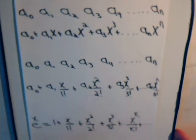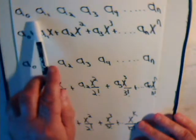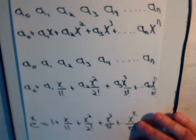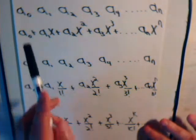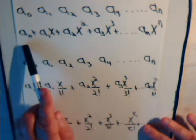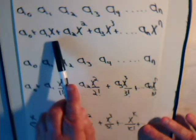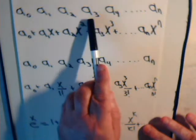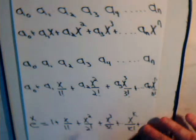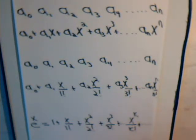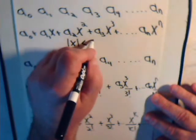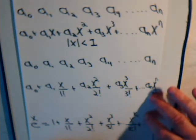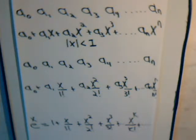Remember from our past videos dealing with ordinary generating functions — if we had a sequence of numbers, we multiply those numbers by a variable x to form a power series. It doesn't matter what the variable x is; that's really irrelevant. We're taking a series of numbers and forming a power series with them. It becomes convenient to choose x so that the absolute value of x is less than 1.